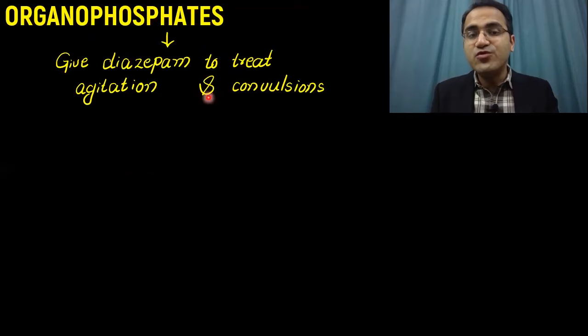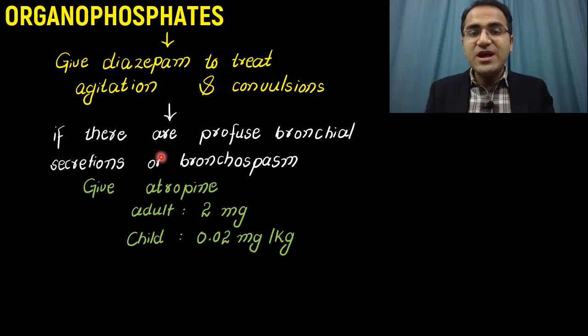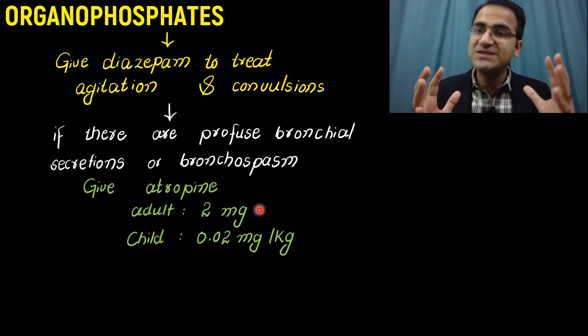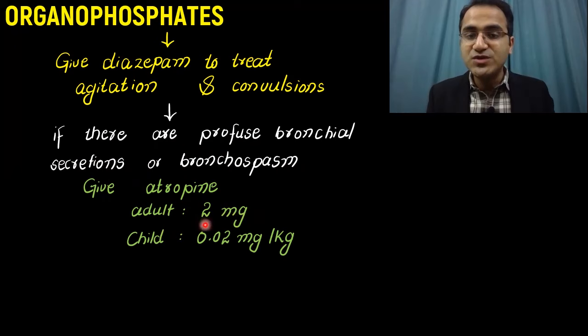You give diazepam to treat agitation and convulsions if the patient is having seizures. If there are profuse bronchial secretions or bronchospasm, you have to give atropine. Atropine is an anticholinergic agent. It blocks the parasympathetic nervous system, therefore it counters the parasympathetic stimulation caused by organophosphates. In adults, you give it 2 mg and in children, you give it 0.02 mg per kg.